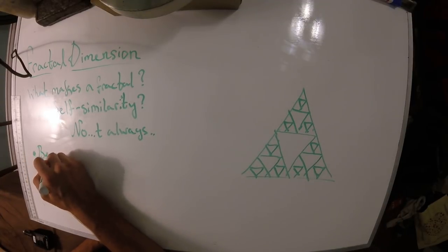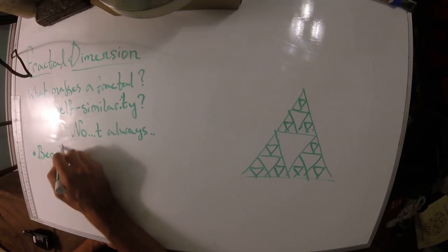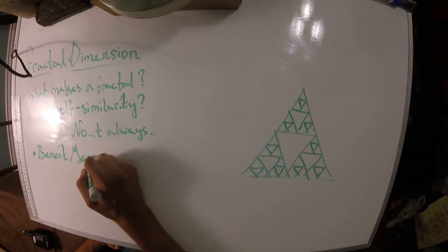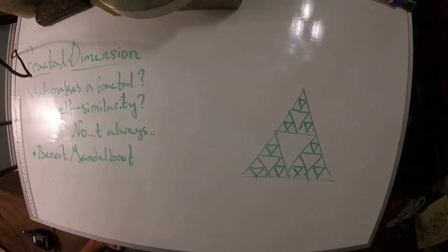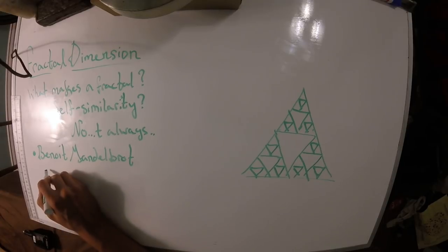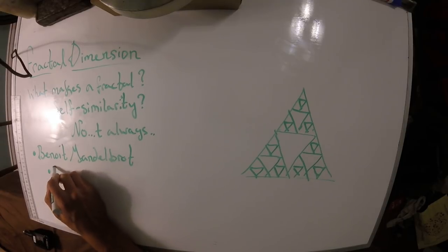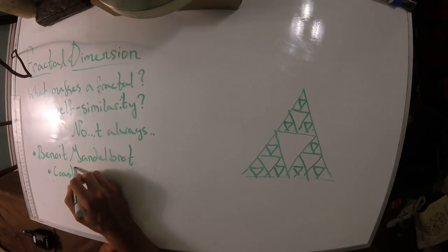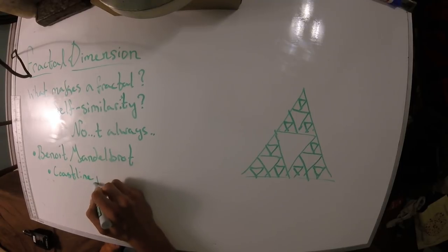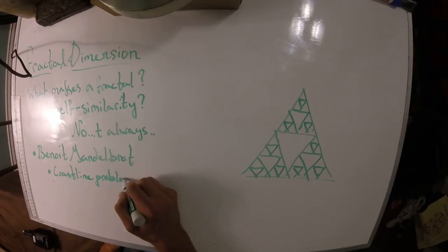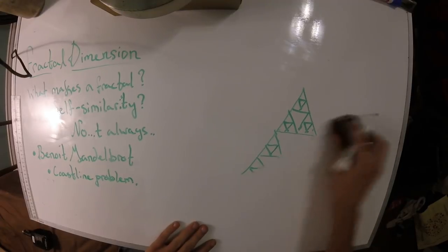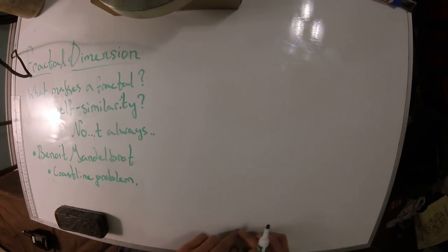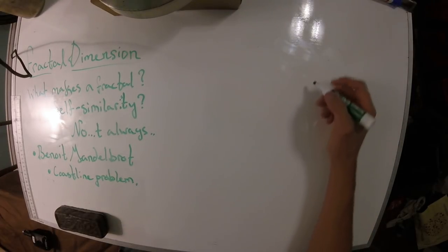The kind of father of fractal geometry is Benoit Mandelbrot. And the big question that led him to come up with this theory of fractal geometry was something called the coastline problem. So what's the coastline problem? Well, for that, we have to consider the outer edge - the coastline of Great Britain.